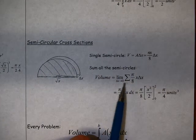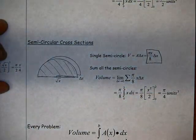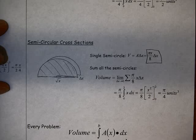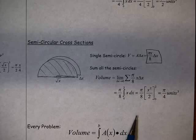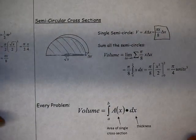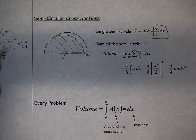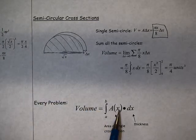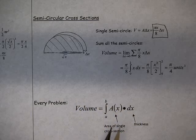We sum up all the semicircles and take the limit of that sum as delta x approaches 0. The volume of a single semicircle was pi x over 8 times delta x, so the integrand is pi over 8 times x dx. Taking pi over 8 out as a constant, finding the easy antiderivative, evaluating at 2 and 0, and subtracting gives pi over 4 cubic units. For these known cross-sections, in every problem we set up a definite integral from A to B, integrating the area of a single cross-section times the thickness dx.